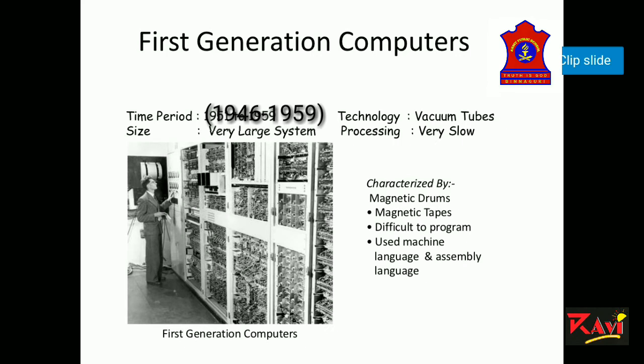The first generation computer started in 1946. Its makers used thousands of vacuum tubes, which were often huge, taking up the space of an entire room. They were very expensive. The first generation computers used machine language, which was the lowest level programming language understood by the computer.